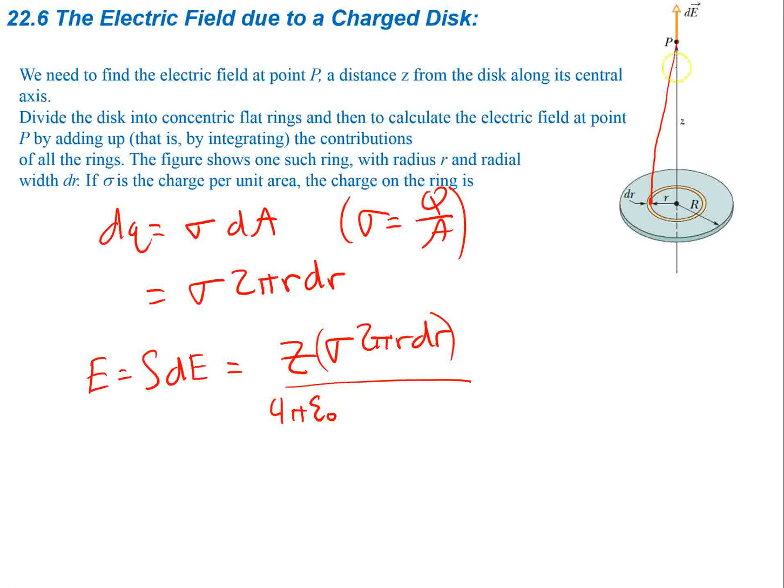If you notice, this creates a triangle with the sides of r and z, so the hypotenuse of the triangle is just going to be z squared plus r squared and the square root of that. So we'll just say that it is z squared plus r squared to the 1/2.